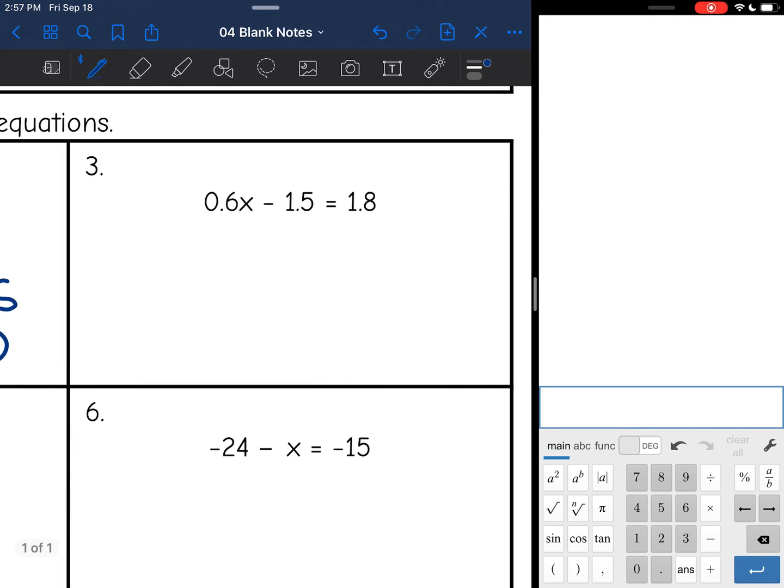Okay, number 3, I have decimals, that is fine. We'll just use the calculator. Same process. I want to get rid of the constant first. The constant is negative 1.5, and I want to make a 0 with that. I'm going to do the opposite of that minus 1.5 by adding 1.5 to both sides.